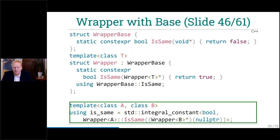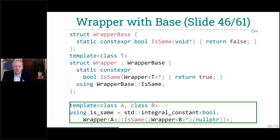Is this really better, or is it the same — since now we have `is_same` with two template arguments again? But keep in mind that we are using `using` here, so it's a type alias. We are still instantiating only a `true_type` or a `false_type`. There is no `is_same` type that derives from that, so we should save a lot of compile time.